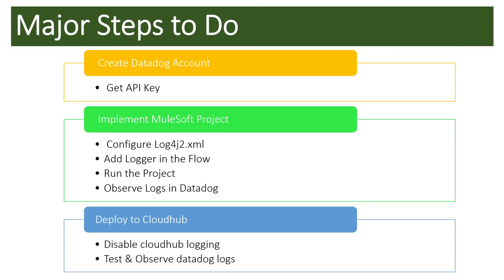The steps we will perform are: first, create a Datadog account — I'll show how to create one, and if you already have an account, how to get the API key, which is needed for the integration from MuleSoft to Datadog. Second, we'll implement a project in Anypoint Studio and see the necessary configurations in terms of the HTTP appender in log4j2.xml. The integration uses an agent-based approach where configuration in log4j2.xml combined with the API key pushes logs directly into Datadog.